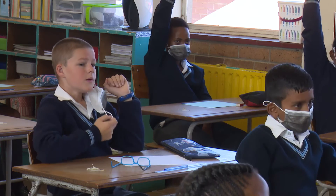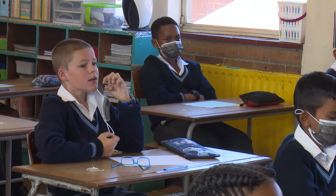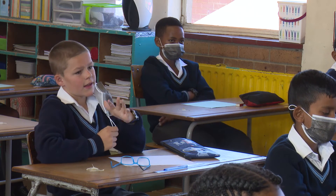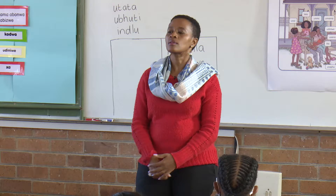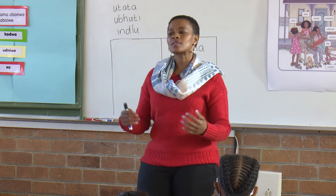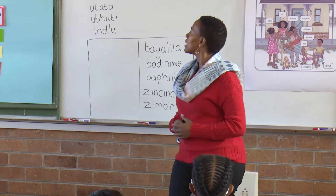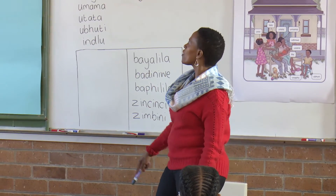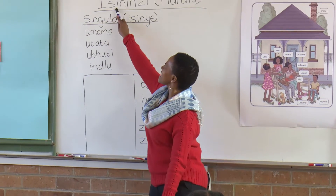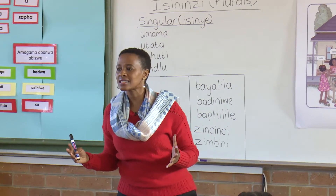Dennis: Plurals is more than one thing. Like for example, one baby, two babies. That's very good, Dennis — he's quite correct. So those are plurals. In Isixhosa we call them isinzi. What do we call them? Isinzi. Very good.